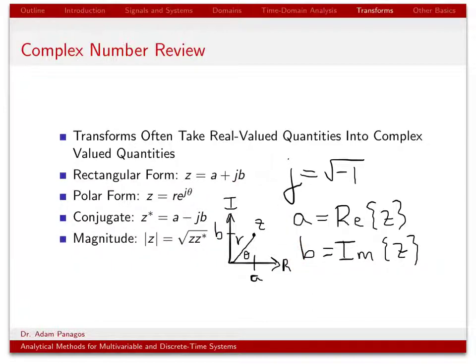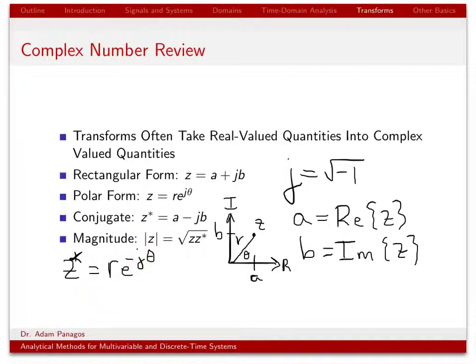We often take conjugates of complex numbers. All a conjugate does is change the sign of the imaginary values. If Z is in rectangular form, we find the j's and change them to negative j's — and any negative j's become positive j's. Similarly, for polar form, we find the j's and change them to negative j's. The conjugate operation simply flips the sign of the j's.